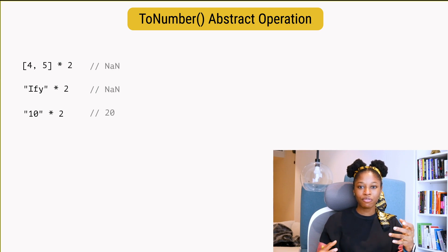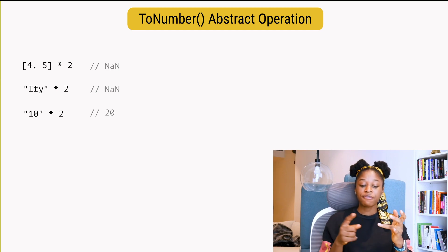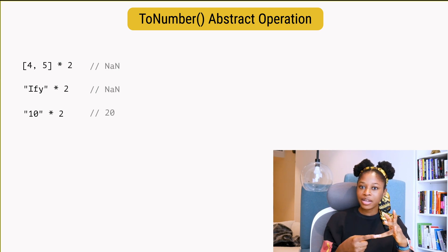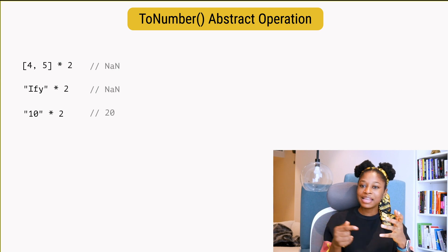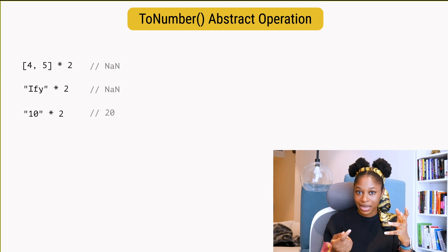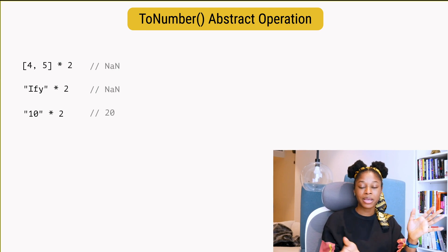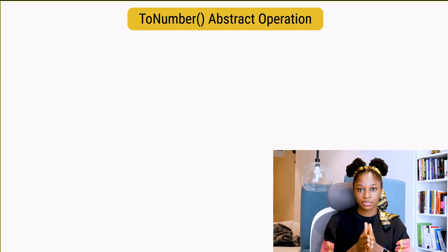According to the spec, the process of converting a string numeric literal to the value of a number type is determined in two steps. First, a mathematical value is derived from the string numeric literal, and then that mathematical value is rounded to the value of a number type with some steps described in the spec.